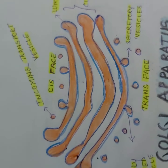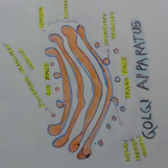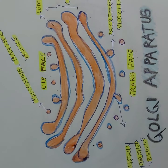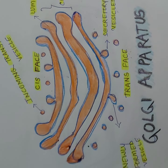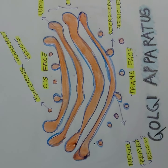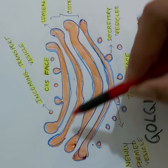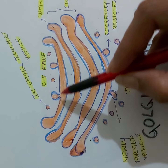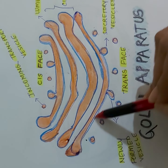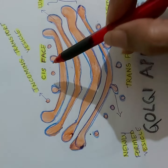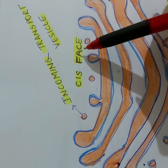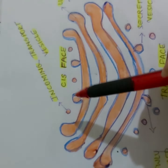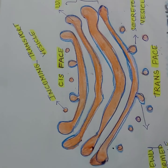This organelle is named after its discoverer — Camillo Golgi was the first one to discover it, hence the name Golgi apparatus. If you carefully study the structure, it is made up of flattened tubules having swollen ends that lie parallel to each other. This is the concave end, called the cis face, and this is the convex end, called the trans face.